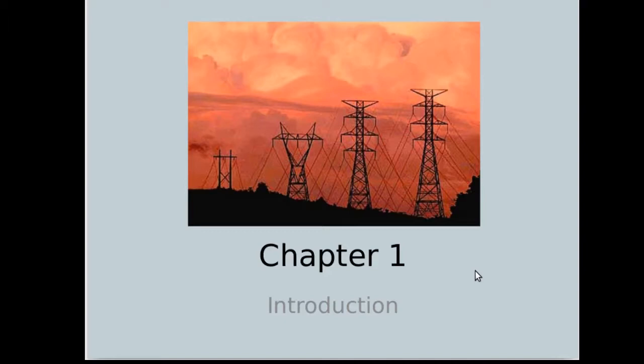The kinds of changes we're talking about could be changes in position — to move an object from one place to another — energy to change temperature, to heat something up, energy to change color. Whatever those changes might be, energy is the source. So when we define the energy of a system, we're defining the potential of that system to produce some sort of change in the surrounding environment.